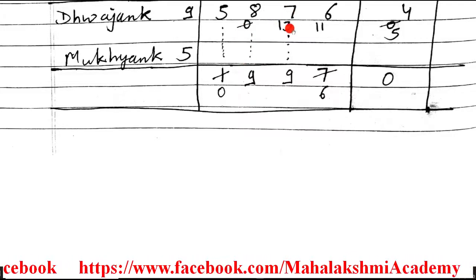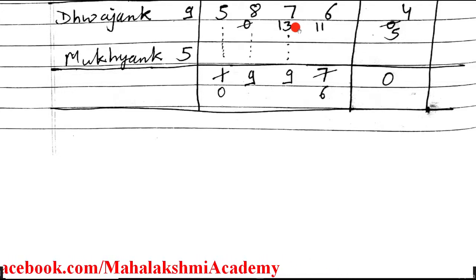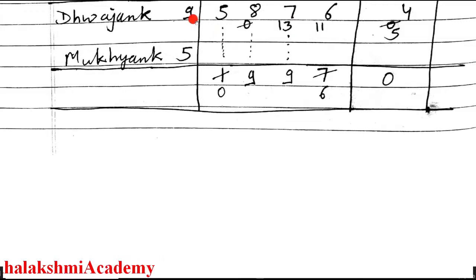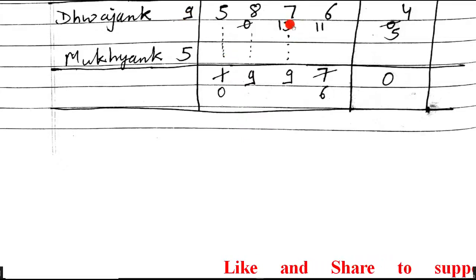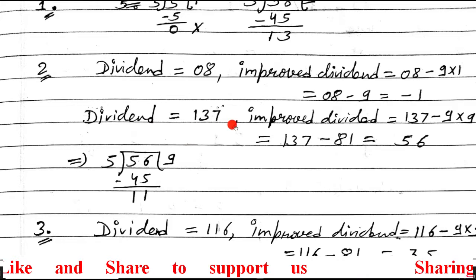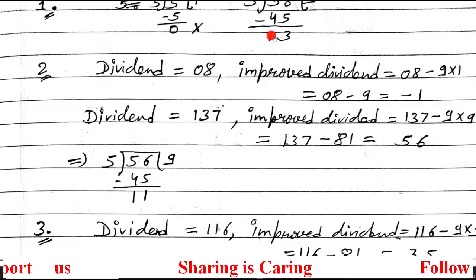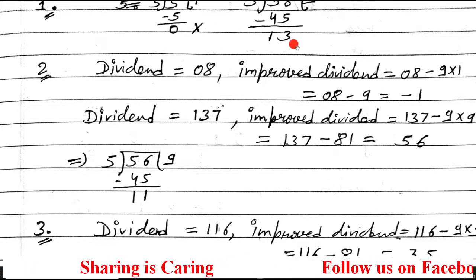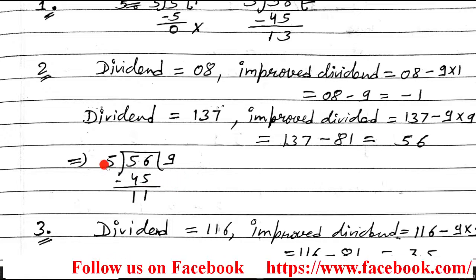The next dividend is 137. To find the improved dividend: 137 minus 9×9 = 137 minus 81 = 56. The answer came positive. Since earlier we got negative, we moved back and reduced. Now since we got a positive improved dividend, move to the further step. Divide 56 by 5.